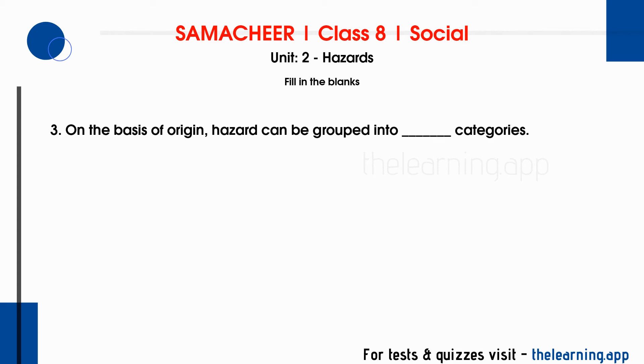Third question: on the basis of origin, a hazard can be grouped into dash categories. The correct answer is 8 categories. Hazards are classified into 8 categories based on their origin.